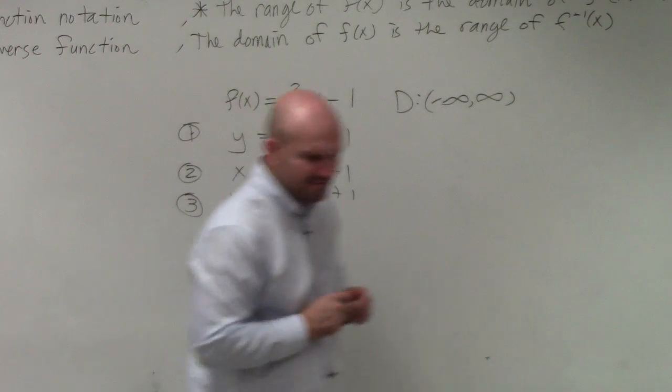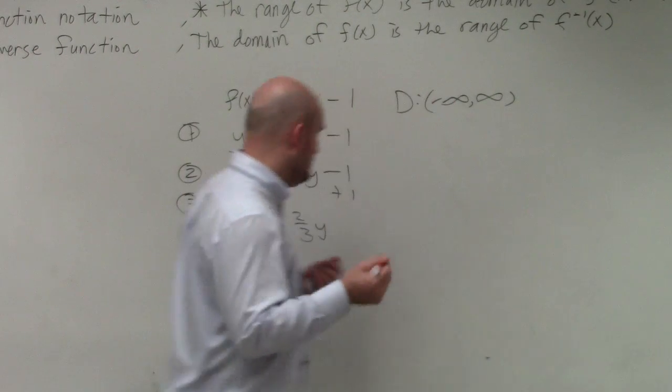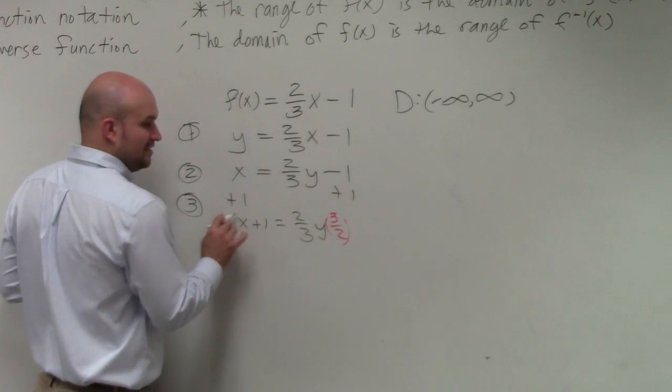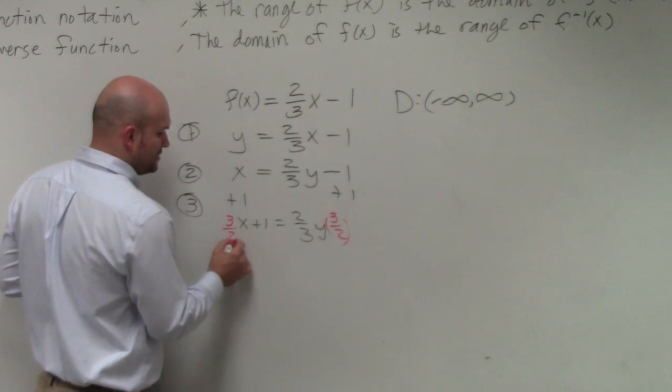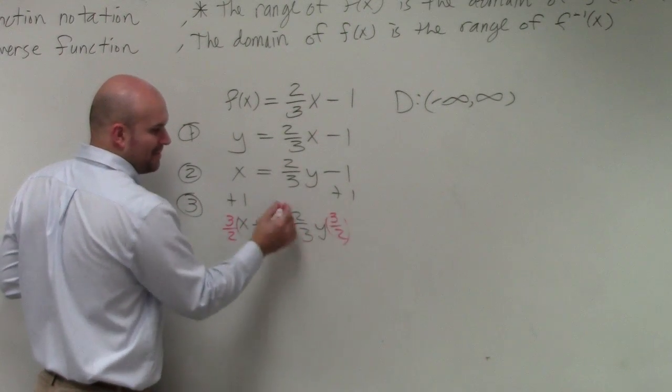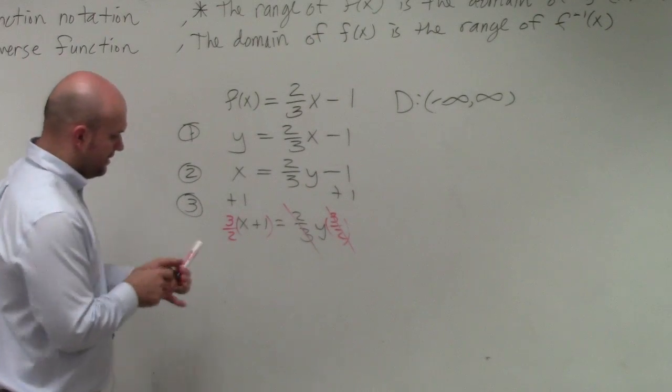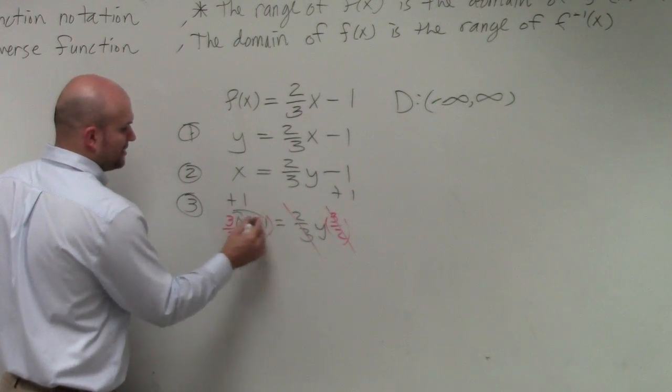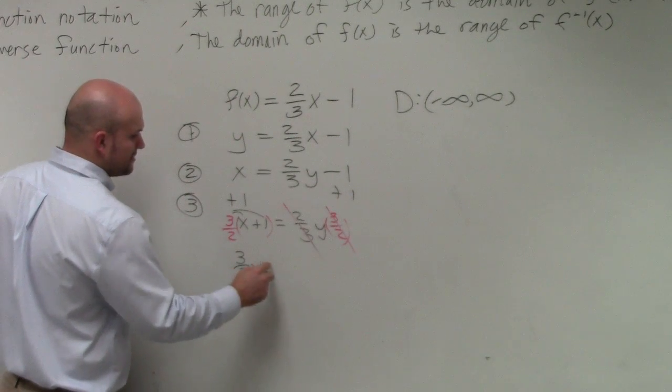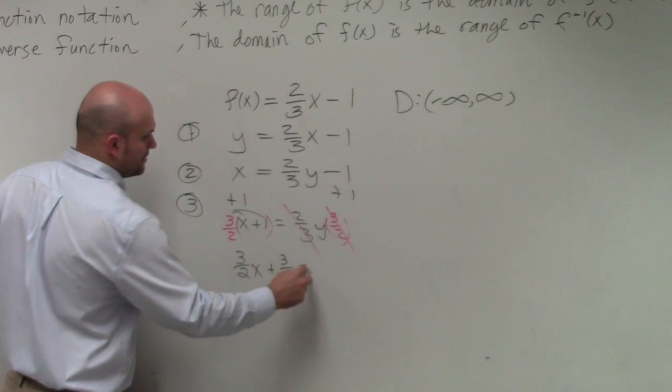x plus 1 equals 2 3rds y. How do we get rid of a fraction? You can always multiply by the reciprocal. Make sure, though, when you're multiplying the reciprocal on both sides, you have to multiply this whole expression by the reciprocal. So make sure you put that in parentheses. Any number multiplied by a reciprocal multiplies to 1. You could also apply a distributive property here to kind of make the problem a little bit easier. So we have 3 halves x plus 3 halves equals y.